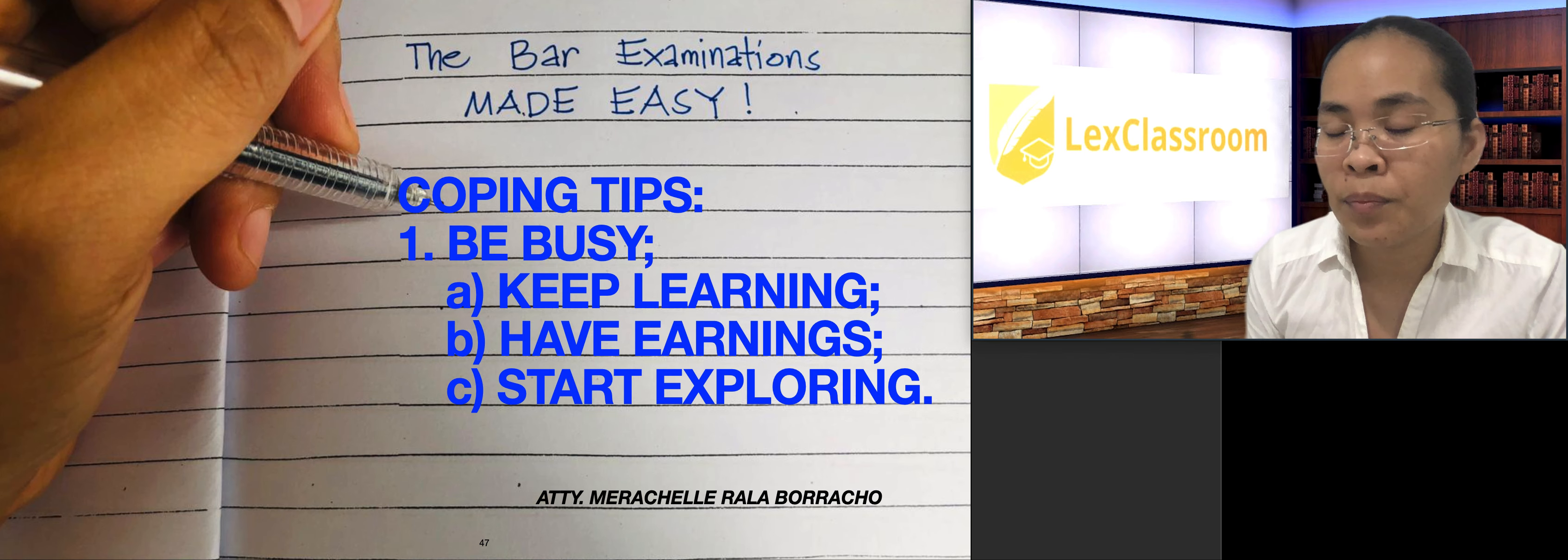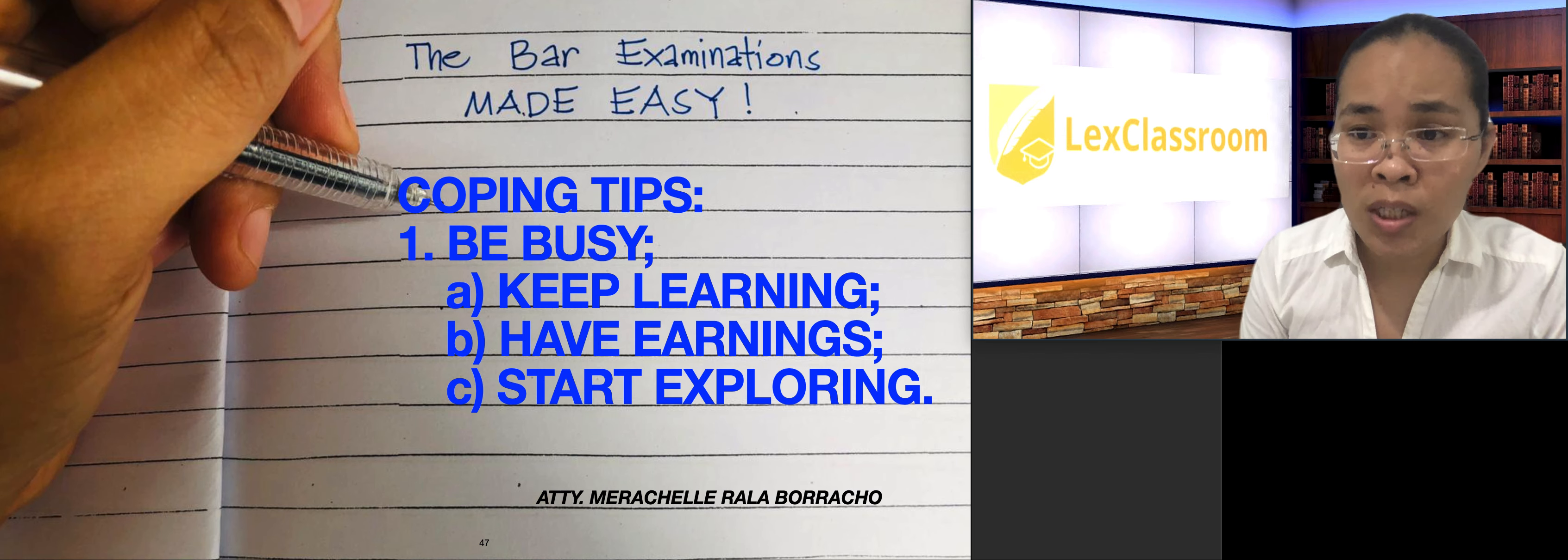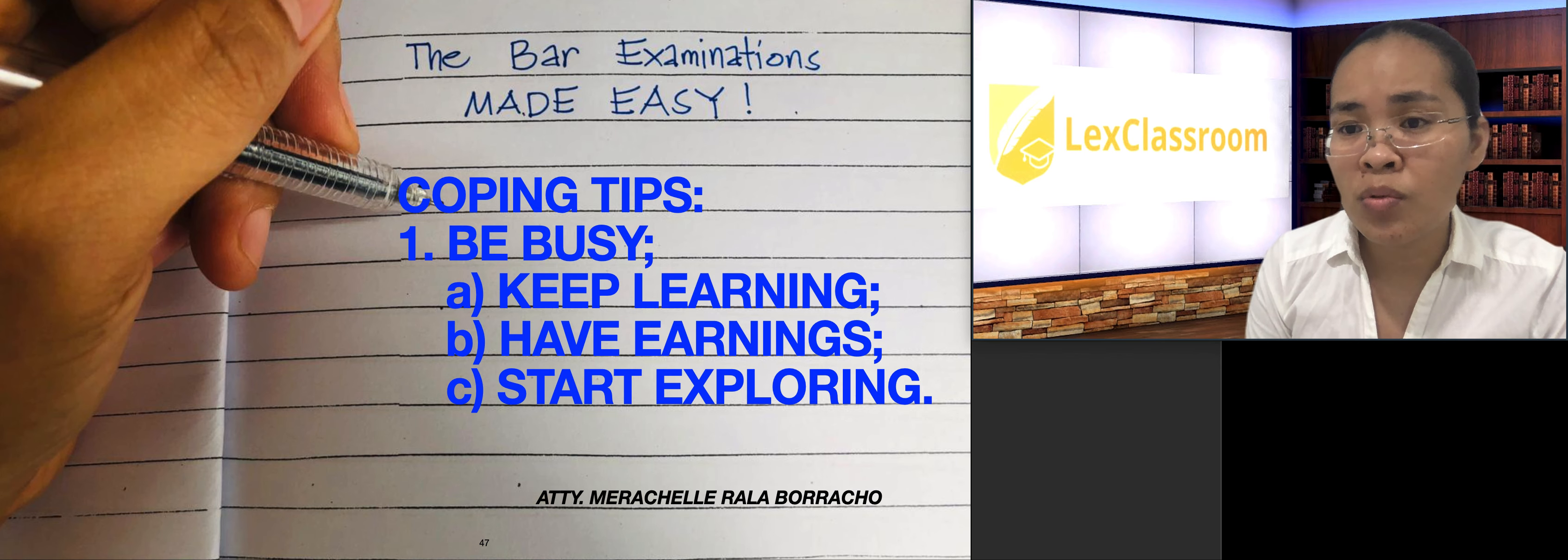But you have to keep learning because if you're not going to use your brain as much as you did during your review when you were having that aim to take the bar. So you still have to keep learning, read your books even if you're done, you have to reread them, read cases, read the newspaper in which the laws or legal principles could be applied. And you have to have earnings so that, you know, it's work that keeps us sane actually for those who are very goal-oriented.